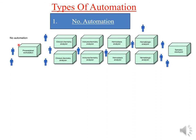In the case of no automation, every section is separated and there are different people in charge of each section. The pre-analytical part has different people assigned, the clinical chemistry part has different people assigned, and the immunochemistry part again has different people assigned.